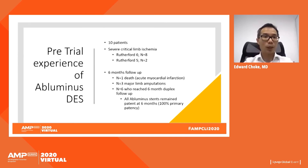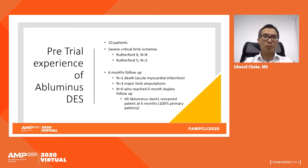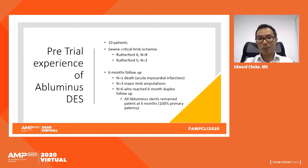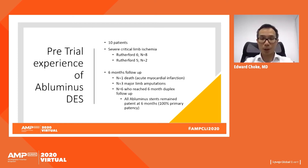Prior to the Abluminus trial, we had pre-trial experience using the Abluminus drug-eluting stent in 10 patients, all with severe critical limb ischemia — eight with Rutherford score 6. At six months, one patient died from acute myocardial infarction, three patients had major limb amputations, and six reached the six-month duplex follow-up.